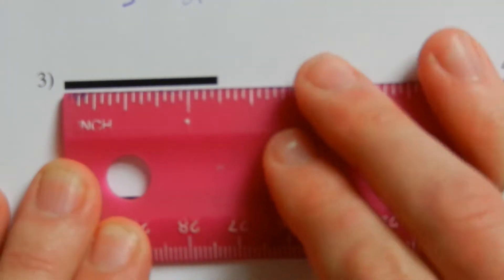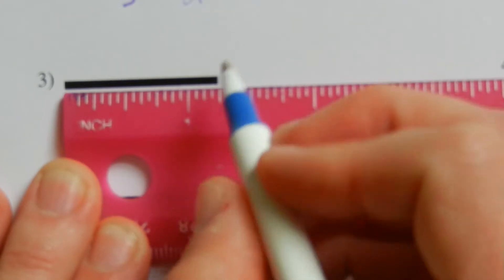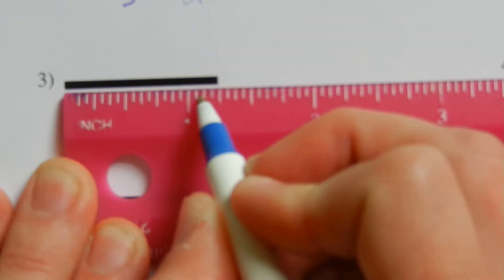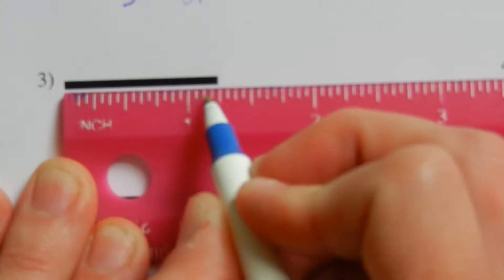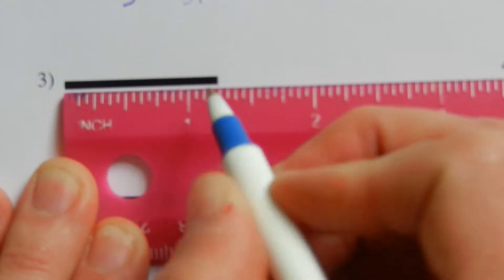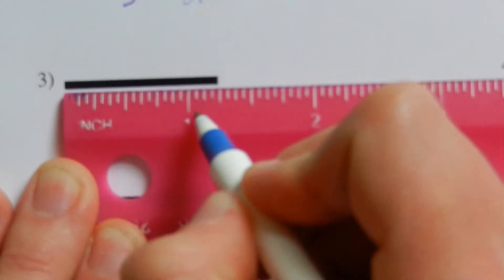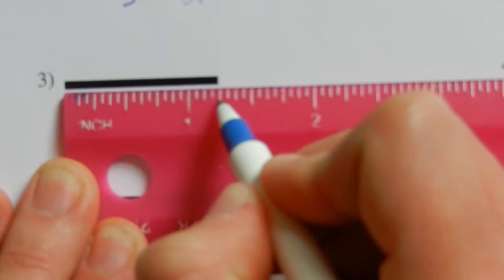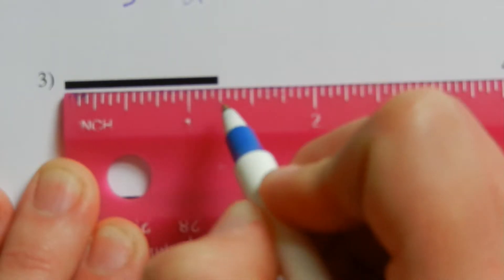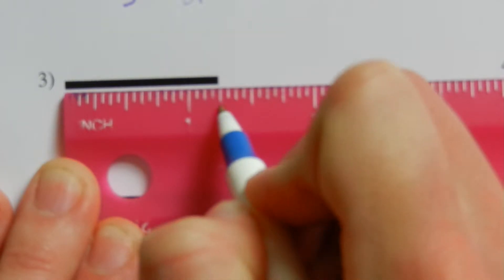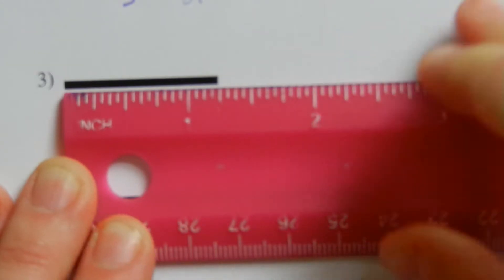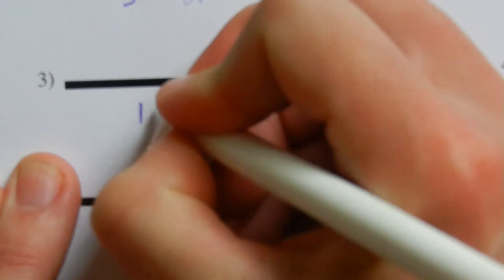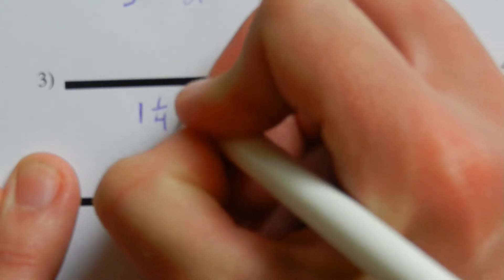For number three, lining our ruler up with the end of the line, you can see that we're going past an inch. The smallest tick marks are sixteenth of an inch; however, we're measuring to the nearest eighth of an inch. So counting over eighths: one eighth, two eighths — we have one inch and two eighths of an inch. Two eighths simplifies to one fourth, so this is one and one quarter of an inch.